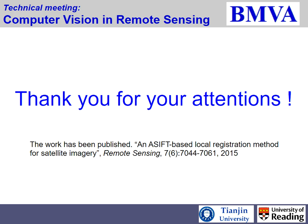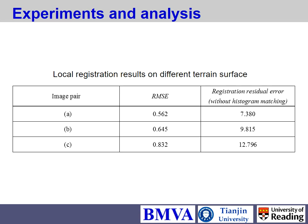The questioner noted that RMS varied from 0.5 to 0.8 between areas A and C, and asked what caused this variation. The presenter replied that this RMS is defined specifically in the paper, based on grid-level comparison before and after registration, and that the variation is due to different scenes being compared.